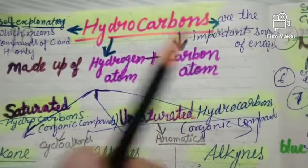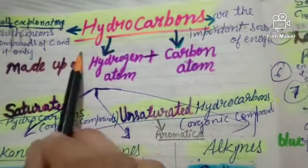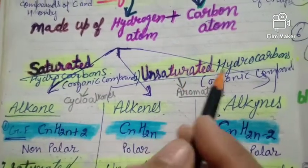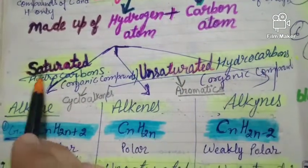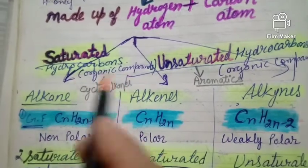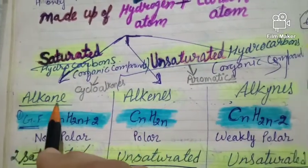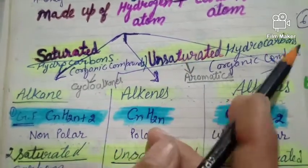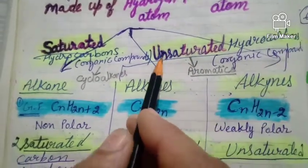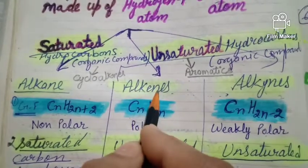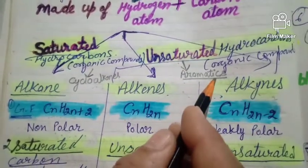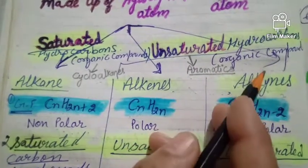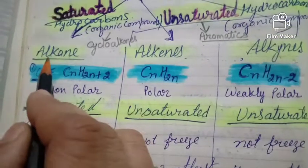Hydrocarbons are divided into two categories: saturated hydrocarbons and unsaturated hydrocarbons. Under saturated hydrocarbons, examples include alkanes and cycloalkanes. Under unsaturated hydrocarbons come alkenes, alkynes, and aromatic compounds. These aromatic compounds you will study in higher classes.